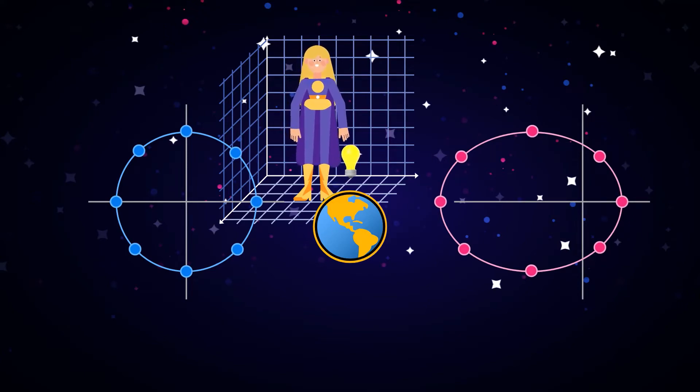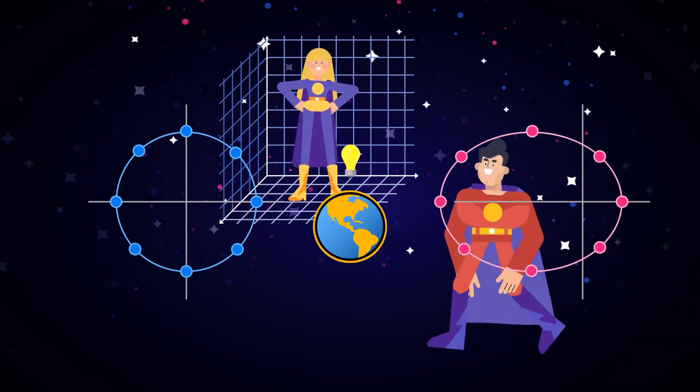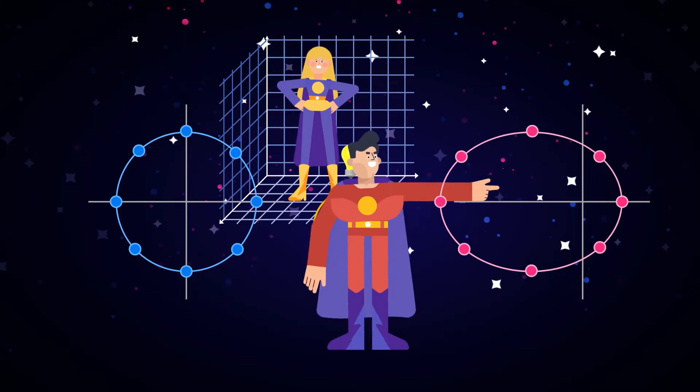This, they claim, disproves Einstein's assertion that a spherical wave appears spherical to all observers. Einstein has clearly made a major blunder, in their eyes, and must be wrong.